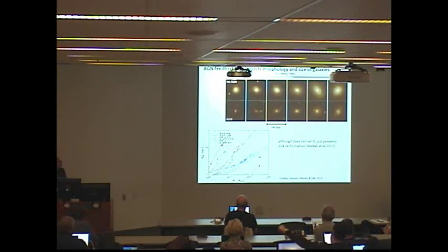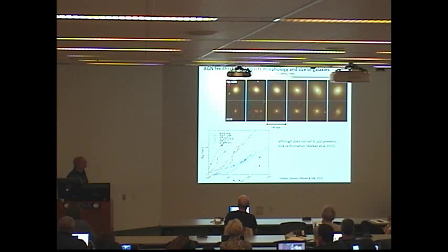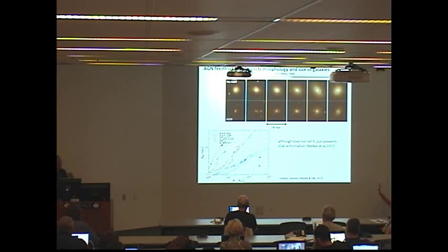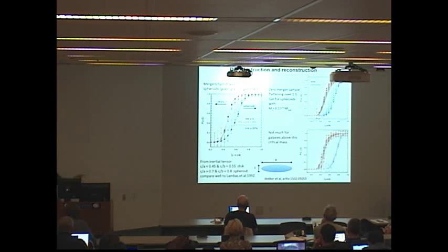An important point about galaxy morphology: AGN feedback changes the morphology of the galaxy. Looking at galaxies in the no-AGN simulation versus the AGN simulation, the sizes actually change but also the morphology. It's not that AGNs set the size — they prevent reaccretion of gas onto galaxies, so mergers set the morphology and then AGNs for massive galaxies prevent them from changing morphology again. This is demonstrated in a paper by Charlotte Welker.